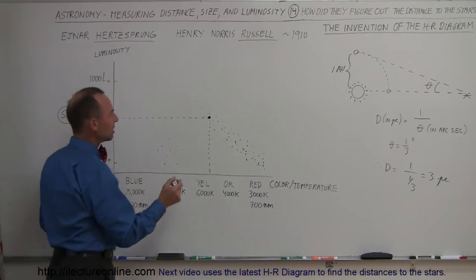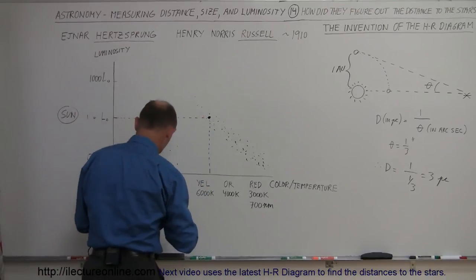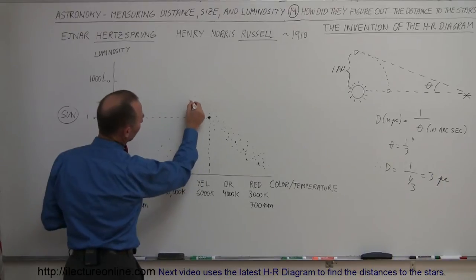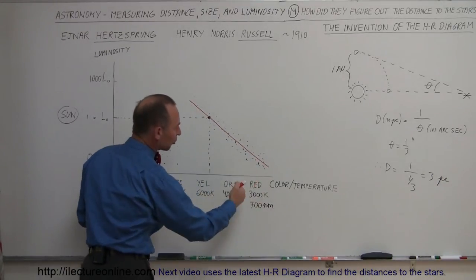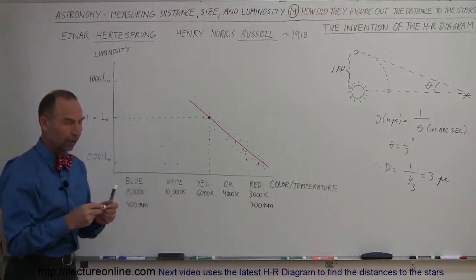But this was a very interesting result, because what they're seeing here is that there's a general relationship between the color of the star, the temperature of the star, and the brightness of the star.